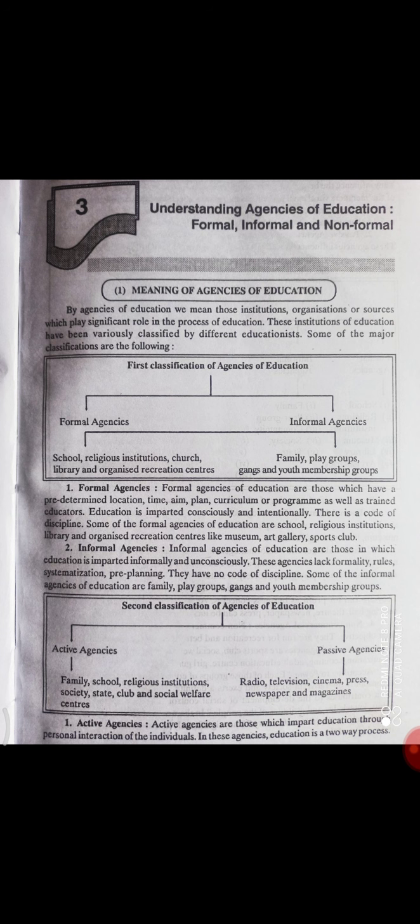اب second classification of agencies of education آتی ہے۔ کچھ educators نے agencies کو active agencies اور passive agencies میں classify کیا۔ Active agencies میں family، school، religious institutions، society، state، clubs اور social welfare centers آتے ہیں۔ Passive agencies میں radio، television، cinema، press، newspaper اور magazines آتے ہیں۔